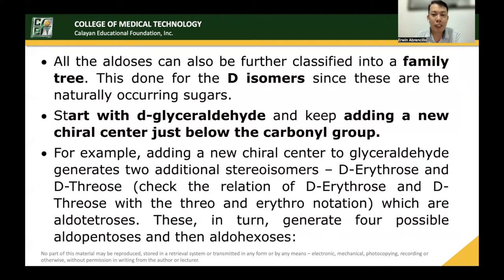The aldoses can be further classified into a family tree. This is done for the D-isomers since these are the naturally occurring sugars. Starting with D-glyceraldehyde, the 3-carbon sugar, you keep adding a new chiral center just below the carbonyl group. Adding a new chiral center to glyceraldehyde generates two additional stereoisomers: D-erythrose and D-threose, which are aldotetroses. These in turn generate four possible aldopentoses and then aldohexoses.